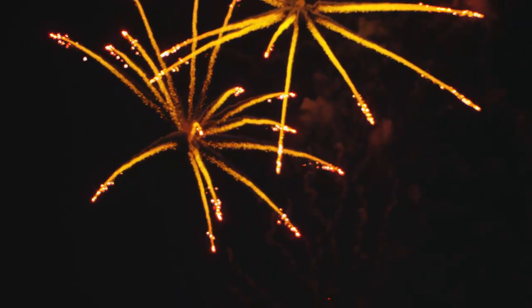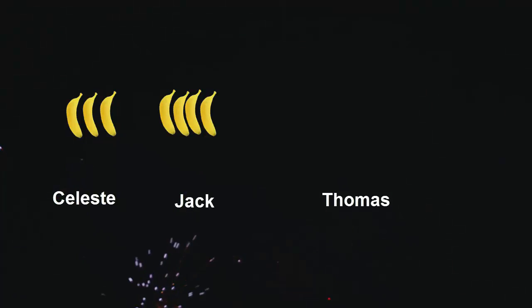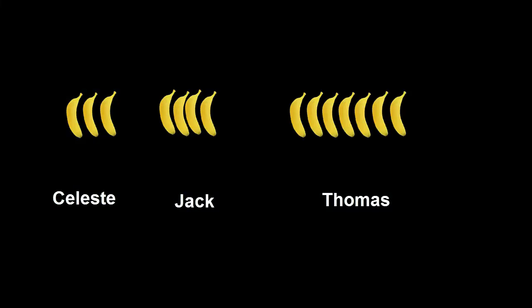To show how an equation works, we're going to have a banana party. Everyone has to bring some bananas, as many as you like. Celeste brought three bananas and her little brother Jack brought four. But hey, Thomas brought seven. Can you see something? Let's count Celeste's and Jack's: one, two, three, four, five, six, seven bananas all together.